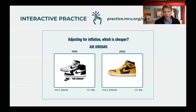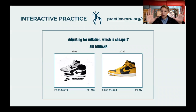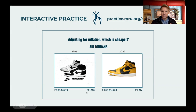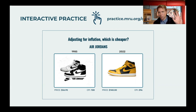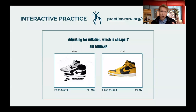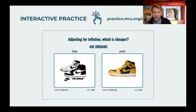Then we have a great interactive practice where students are given two very similar goods from different time periods. They're given the relevant CPIs and have to figure out: after adjusting for inflation, which is cheaper? There are a bunch of fun ones to compare — tooth fairy payments for teeth, the Model T compared to a present-day car, the Big Mac. Lots of fun ones for your students to do.